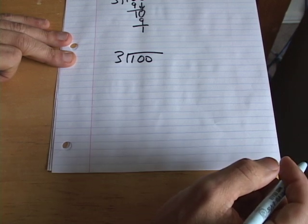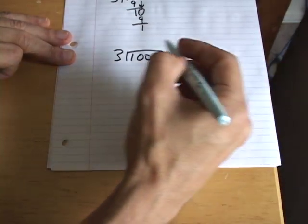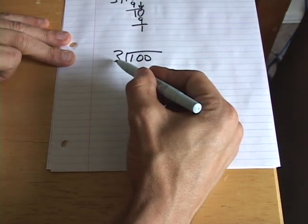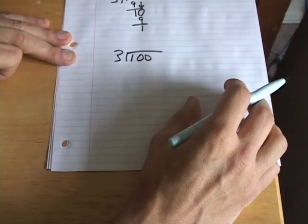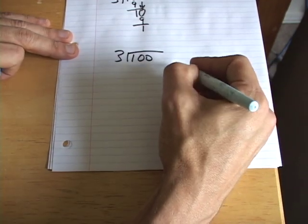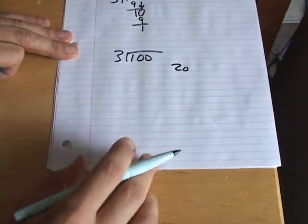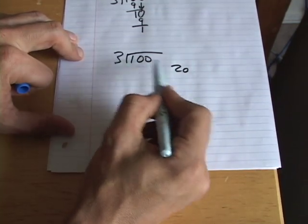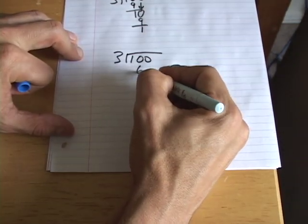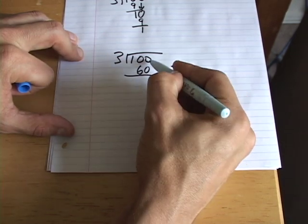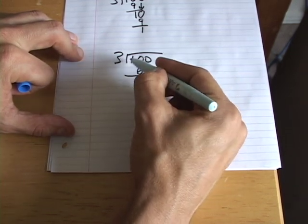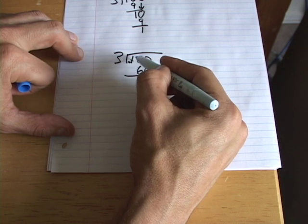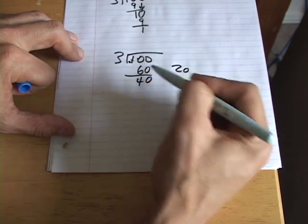We're instead going to say, okay, we're going to take a guess. 3 goes into 100, I don't know, 20 times. So we go 3 times 20, we'll put the 20 there, and 3 times 20 is 60. And then we go 0 minus 0 gives you 0. 0 minus 6 we can't do, so we borrow one here. And we have 10 minus 6 is 40.